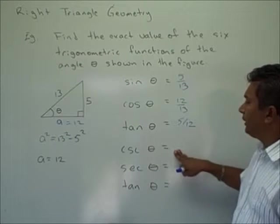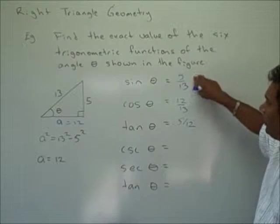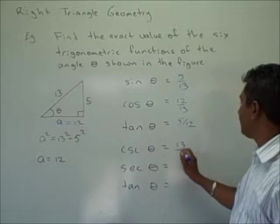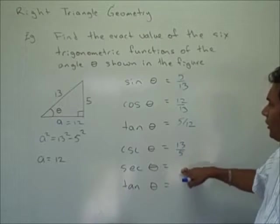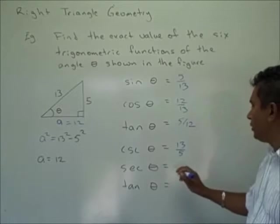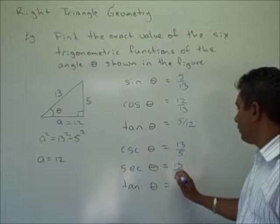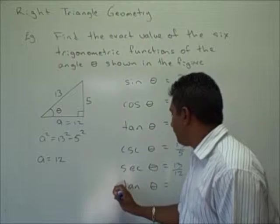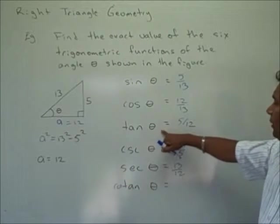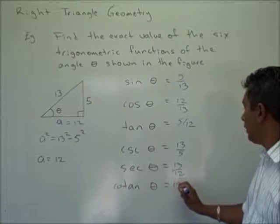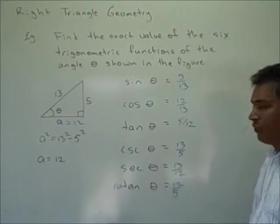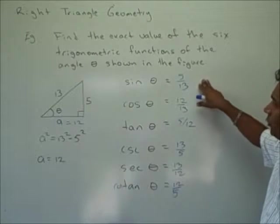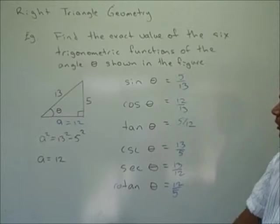Cosecant theta is the inverse of sine, so this is 13 over 5. Secant theta is the inverse of cosine, so this is 13 over 12. Cotangent theta is the inverse of tangent theta, so this becomes 12 over 5. So here we have all six trigonometric functions given two sides of a right triangle.